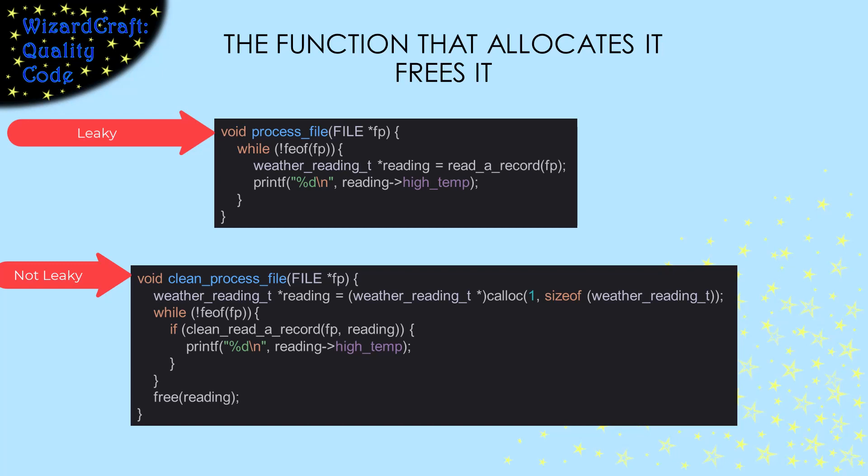In this example, that means that ProcessFile should allocate the space, then pass that space to read_a_record to get the data. When it's finished processing it, it should free the space. Since the calloc and free are in the same function, it's easier to check that we actually did the necessary free. No memory leak.